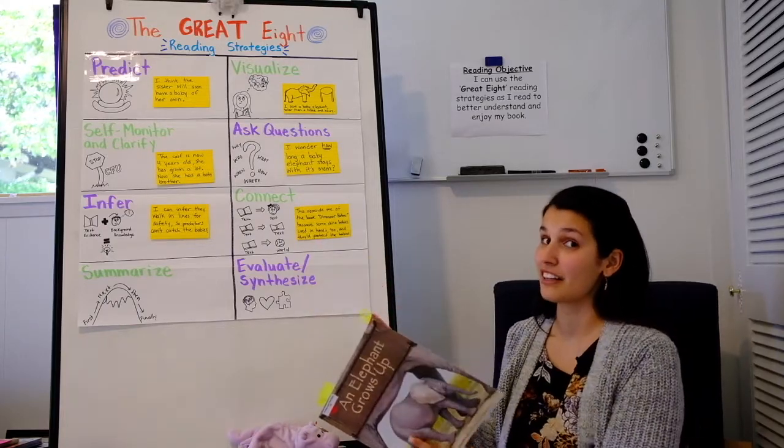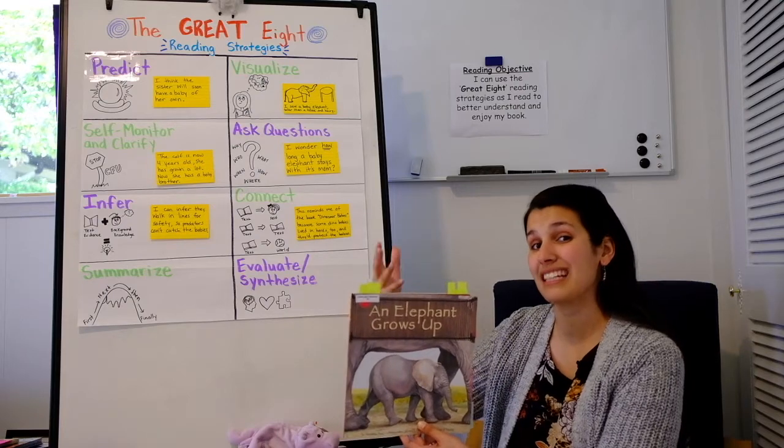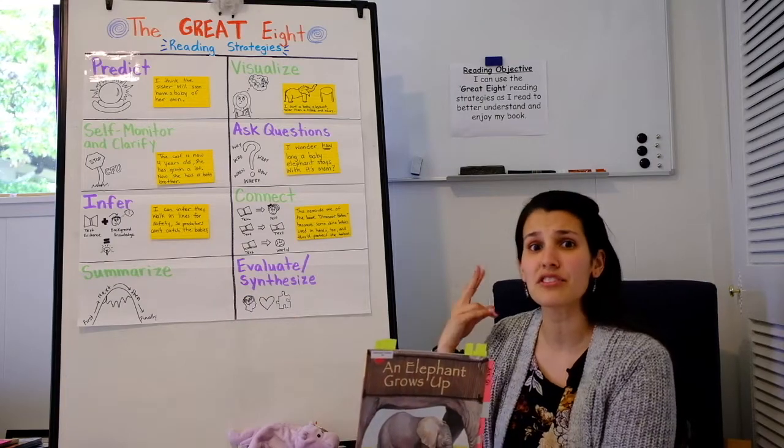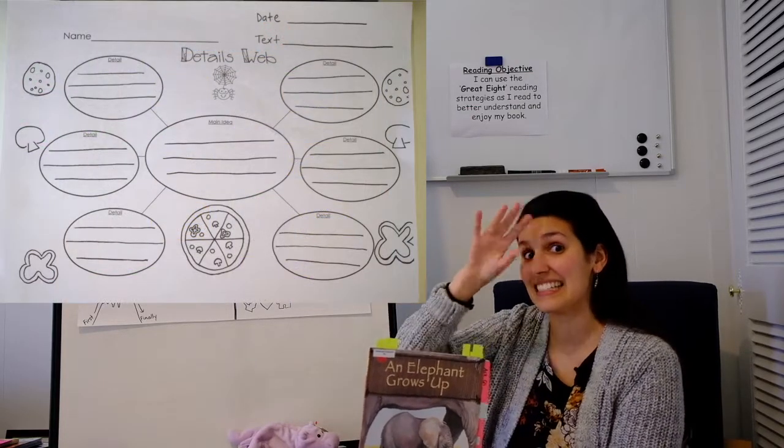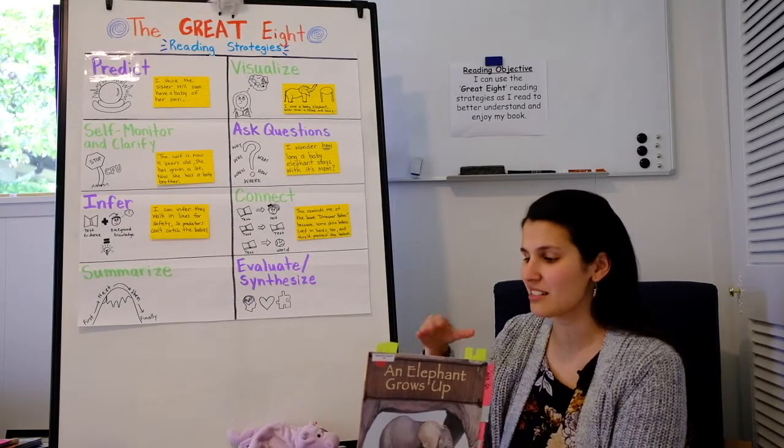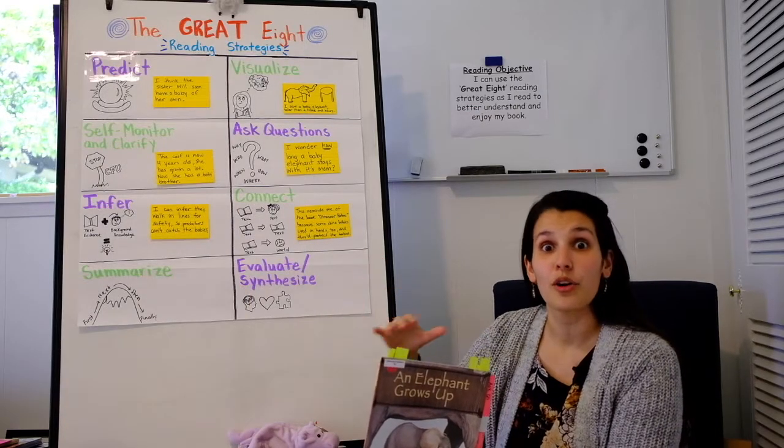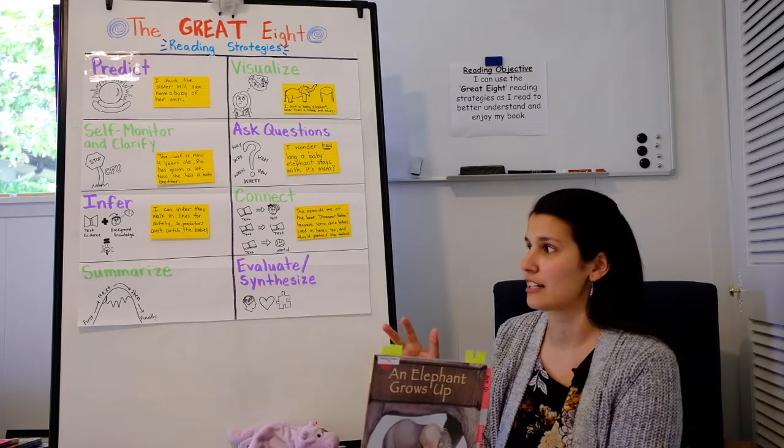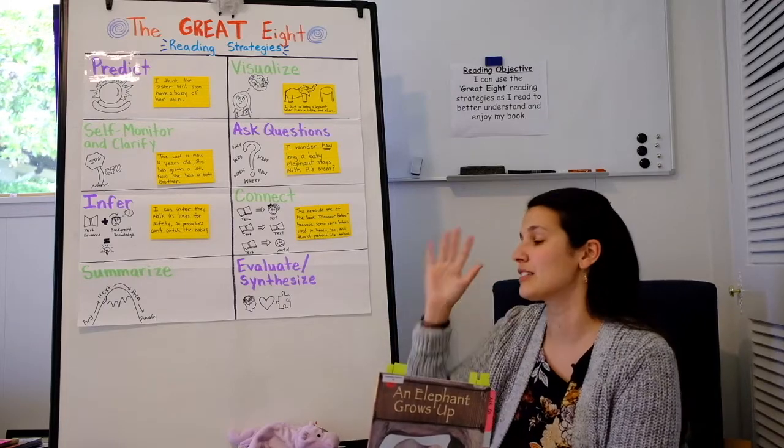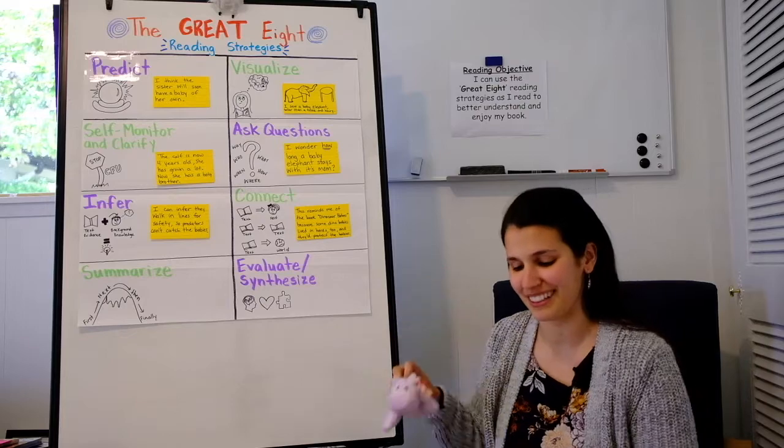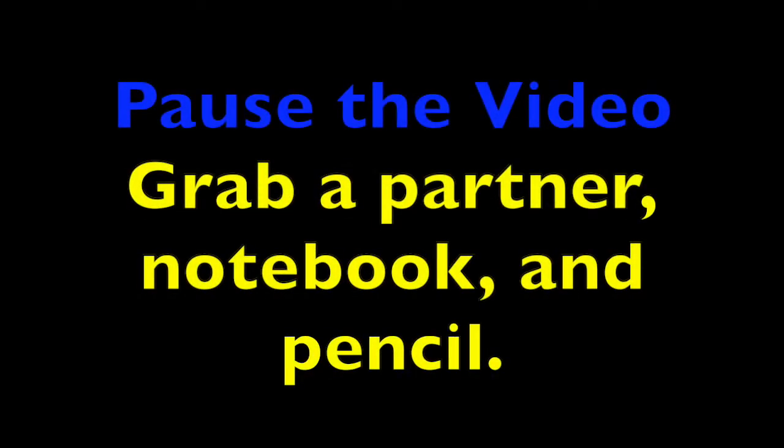Here it goes: I can use the great eight reading strategies as I read to better understand and enjoy my book. Same objective as the other two lessons this week. We're finally getting to our last two great eight strategies. So excited. I know she's going to listen as we read. An elephant grows up. So listen carefully. Remember I told you guys last time that this book is a narrative nonfiction which means it's full of facts but it's told in an order with a beginning middle end. So that means that when we summarize today we have two options. We could summarize the way that we are used to summarizing nonfiction which is thinking of a main idea and detail web, or we could use first, next, then, and last or finally. So we can do either way today. Think about which way you're going to prefer doing because at the end you'll have a chance to summarize with your partner. I almost forgot to tell you to get the things you need. Before I read, please grab your turn and talk partner and please grab your notebook and something to write with.